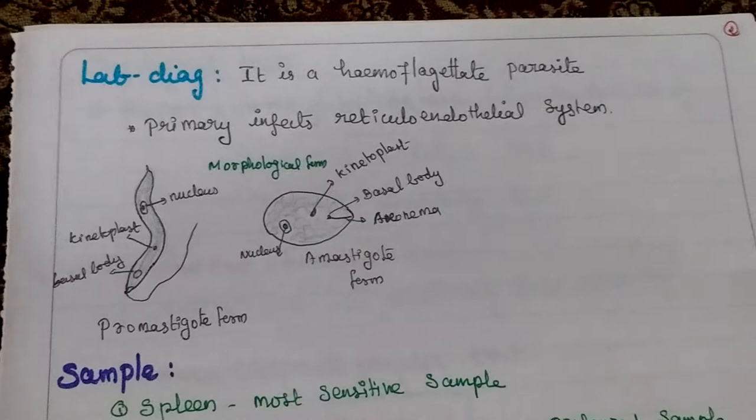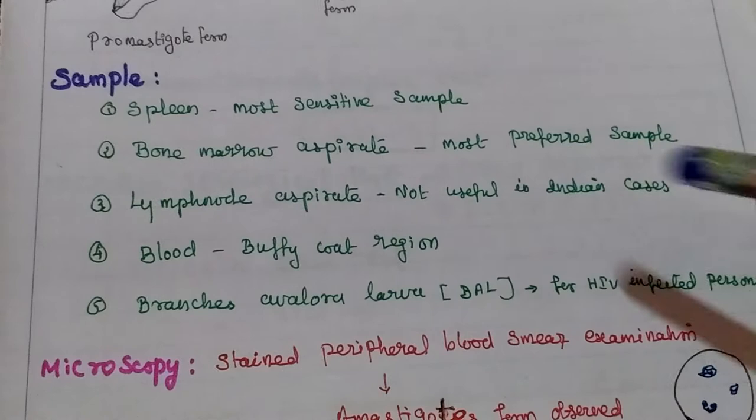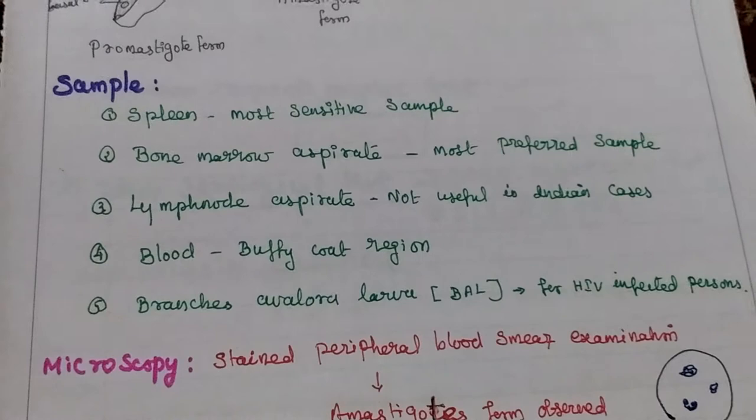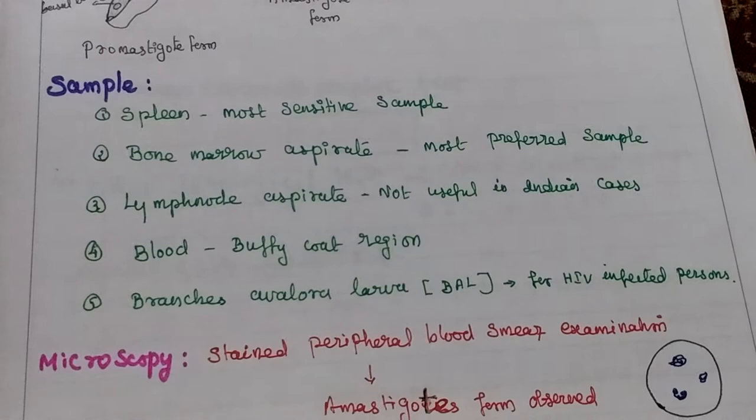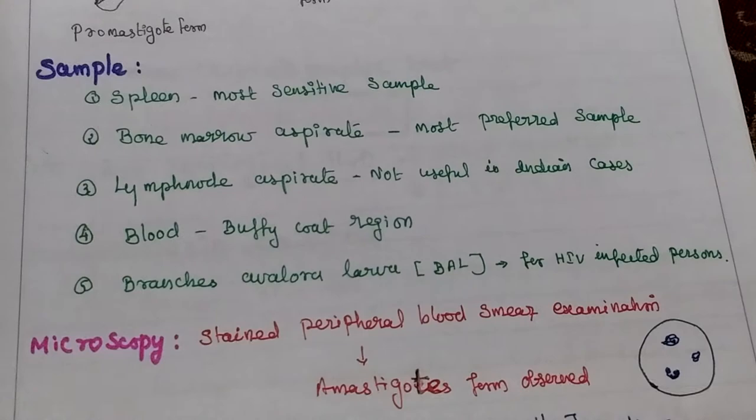For sample collection, different types of samples are used. Spleen aspirate is the most sensitive sample. Bone marrow aspirate is the most preferred sample. Lymph node aspirate is not useful for Indian cases. Blood sample — the buffy coat region is used. BAL (bronchoalveolar lavage) is used for HIV patients.